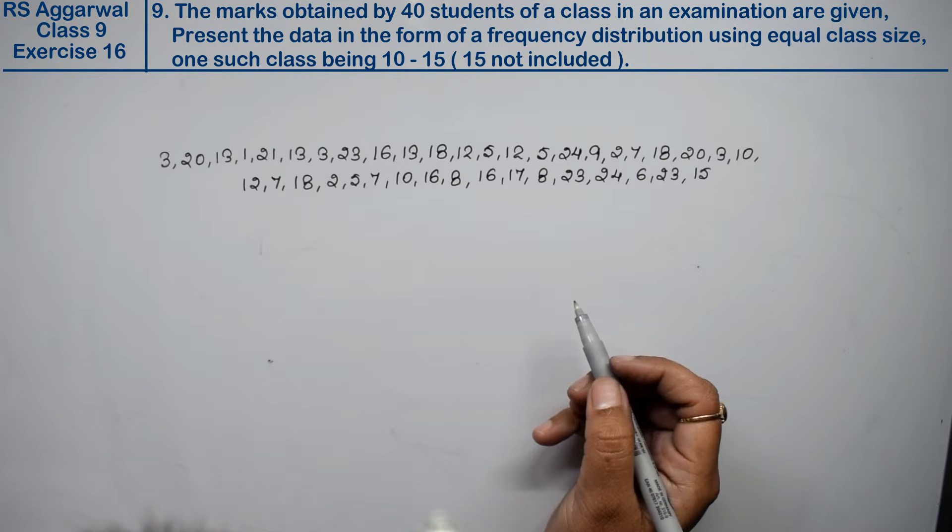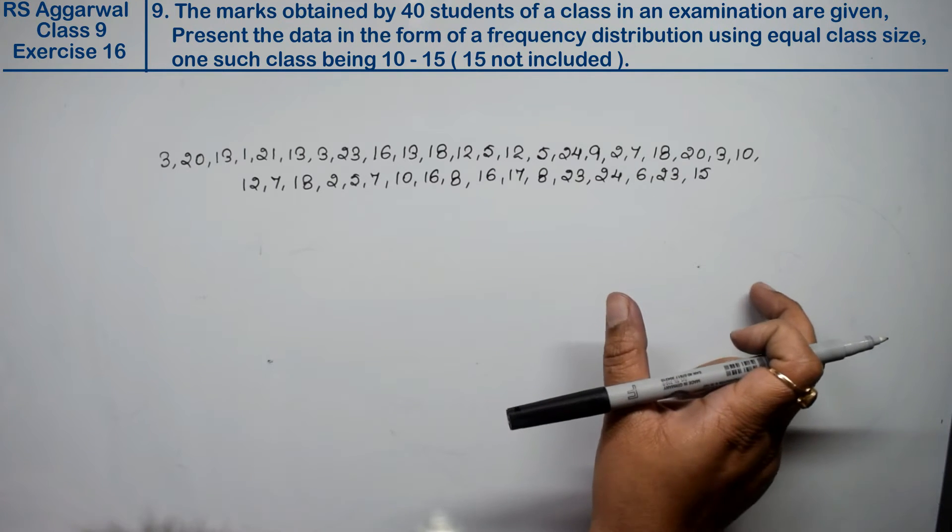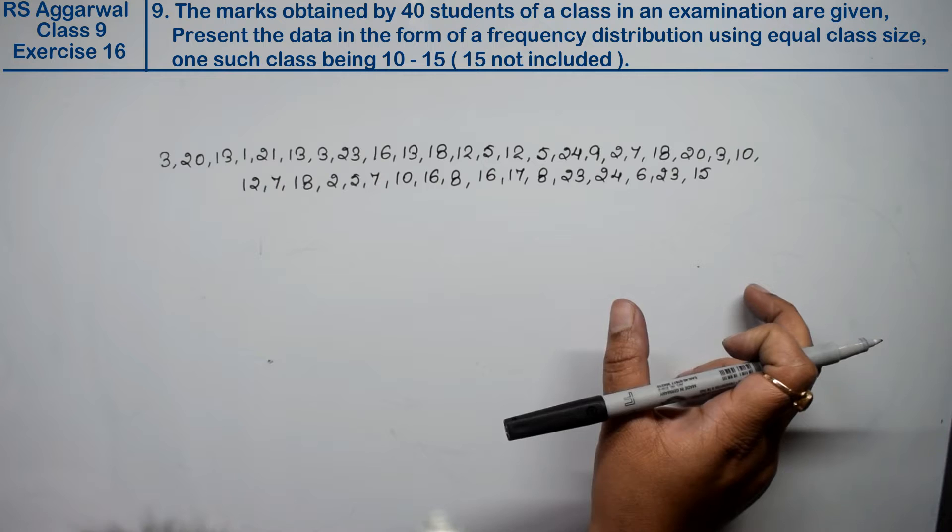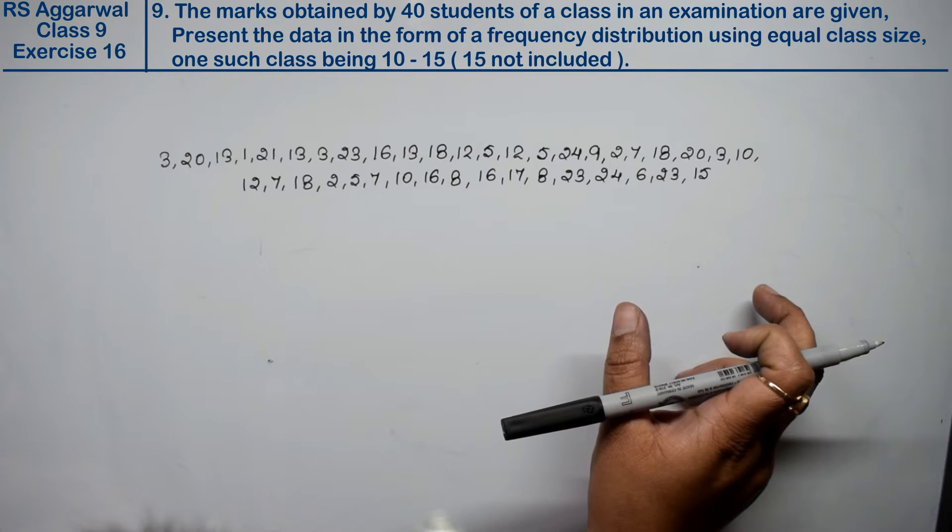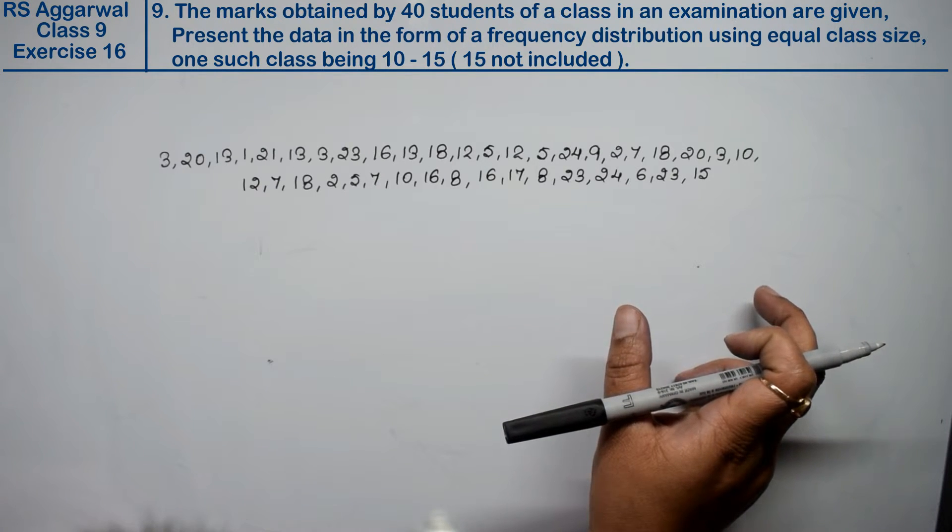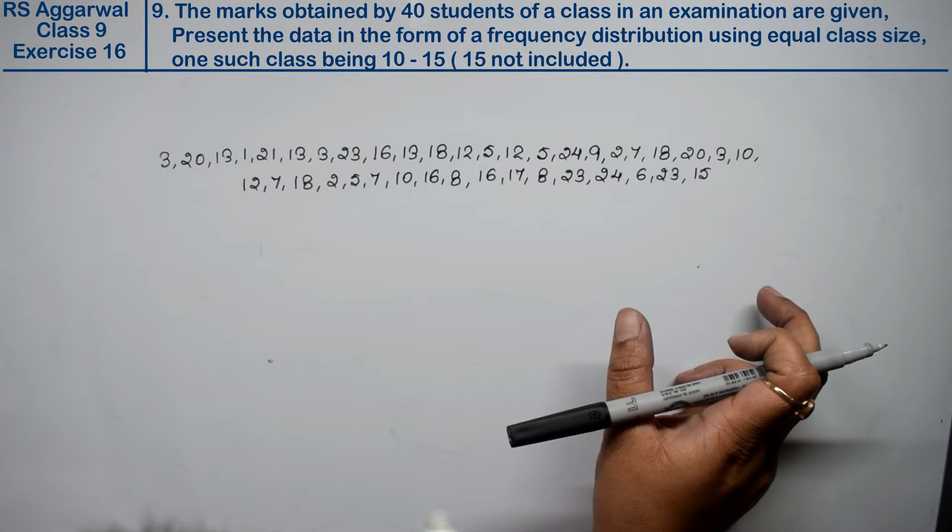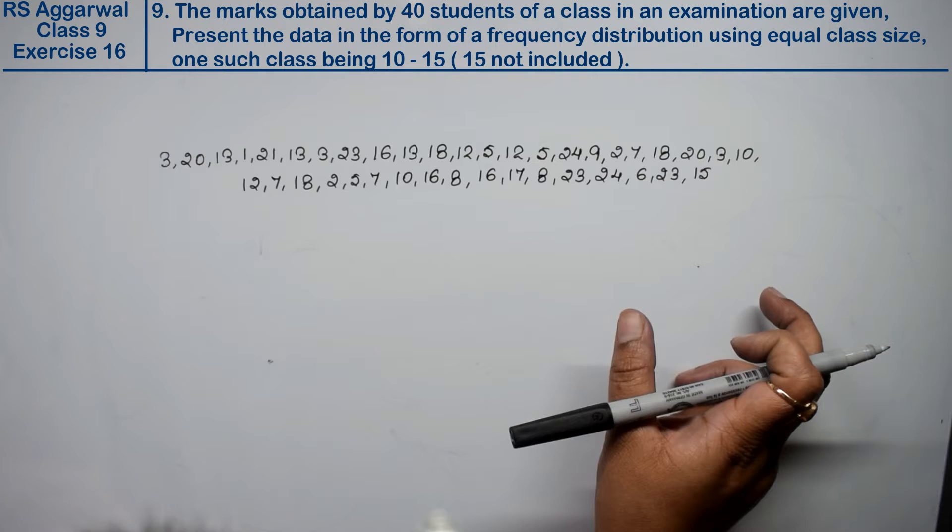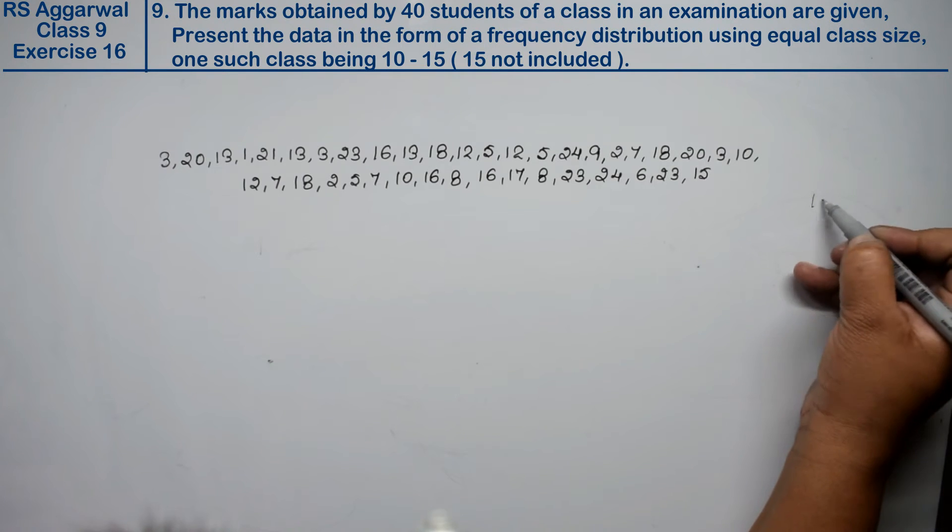Let's do question number 9 of Exercise 16, presentation of data in tabular form. The marks obtained by 40 students of a class in an examination are given. Present the data in the form of a frequency distribution using equal class size, one such class being 10 to 15, where 15 is not included.